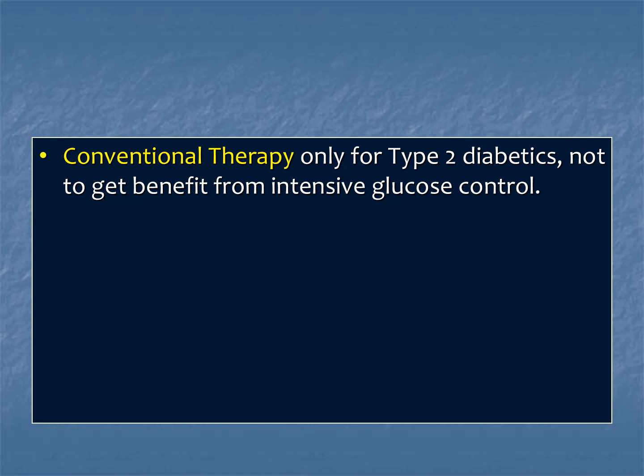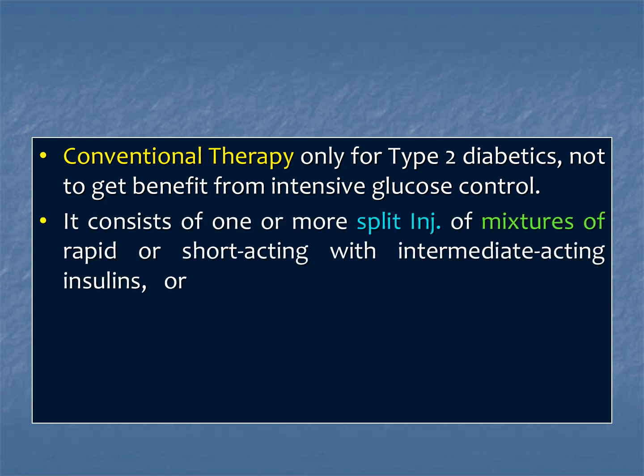Another way is conventional therapy, practiced only for type 2 diabetic patients — not to get the full benefit of intensive glucose control. In conventional therapy, we give one or more injections separated at various times, using a mixture of different types of insulin — especially a mixture of rapidly or short-acting with intermediate-acting insulin. That is the commonly used mixture for conventional therapy.